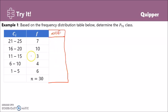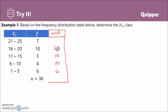We add up the frequencies starting from the lowest. We have 6 plus 4, that's 10; plus 3, that's 13; plus 10, that's 23; plus 7, that's 30. Take note that the last less than cumulative frequency is equal to the total number of frequency.